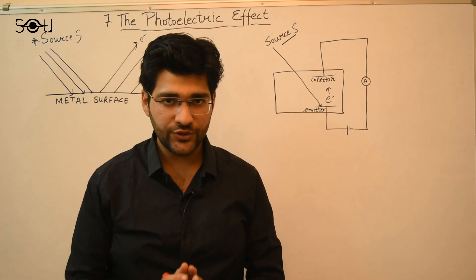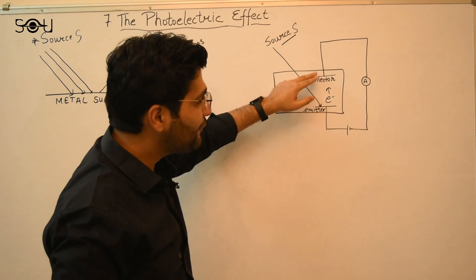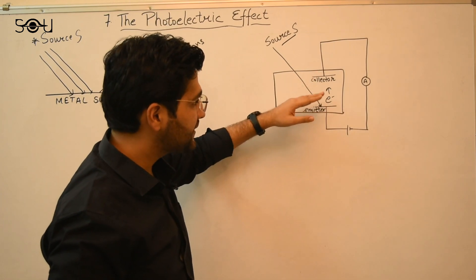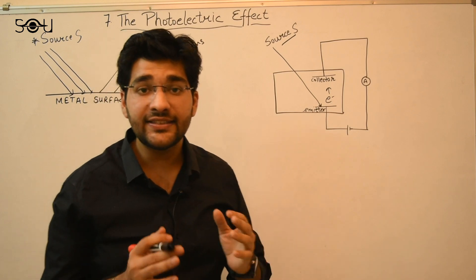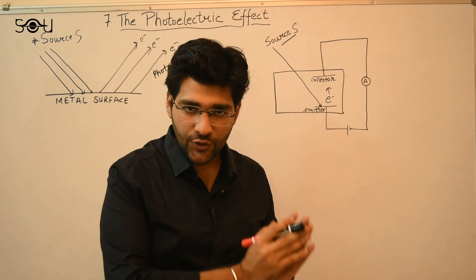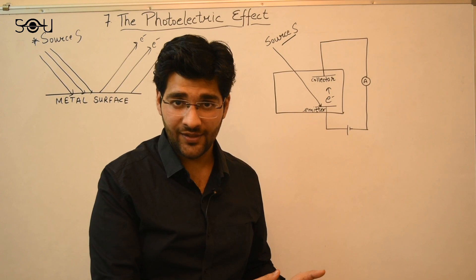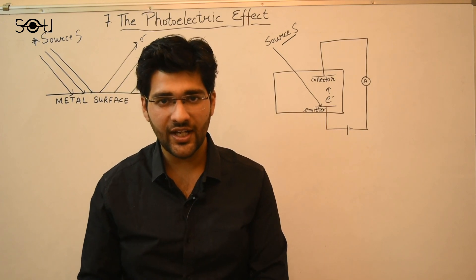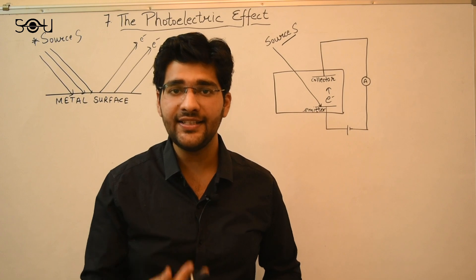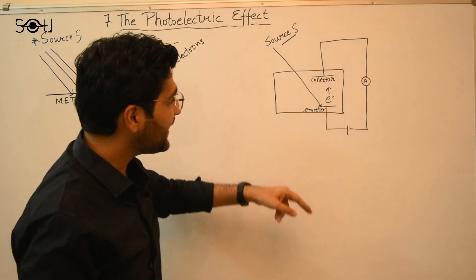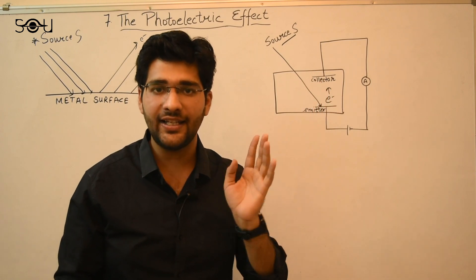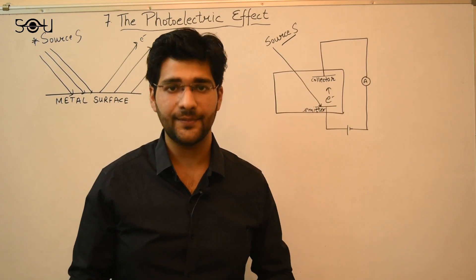Now, suppose you start applying negative voltage to the collector — what will happen? The number of electrons that reach the collector will start decreasing. Because the collector now has a negative potential and electrons are also negatively charged, like charges repel each other, and hence fewer electrons can reach the collector.